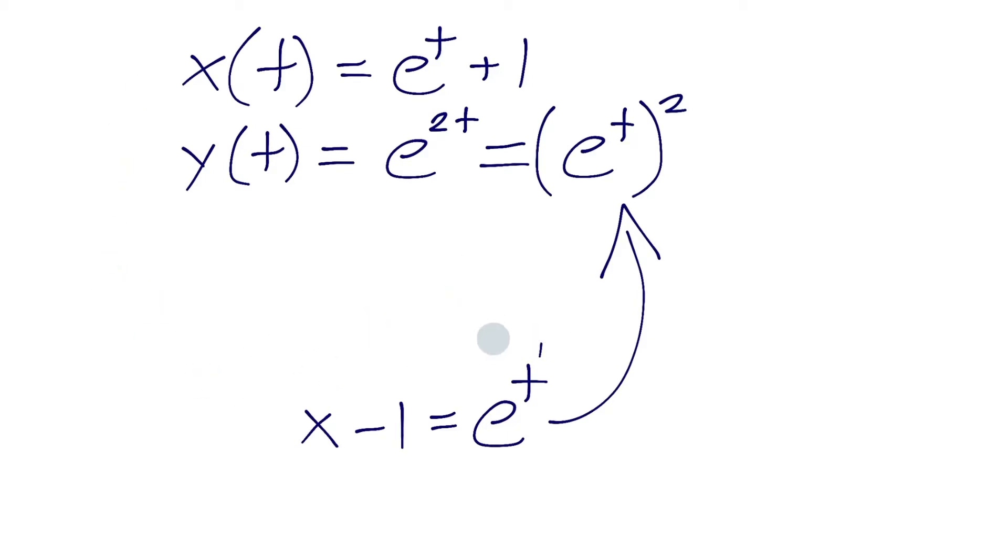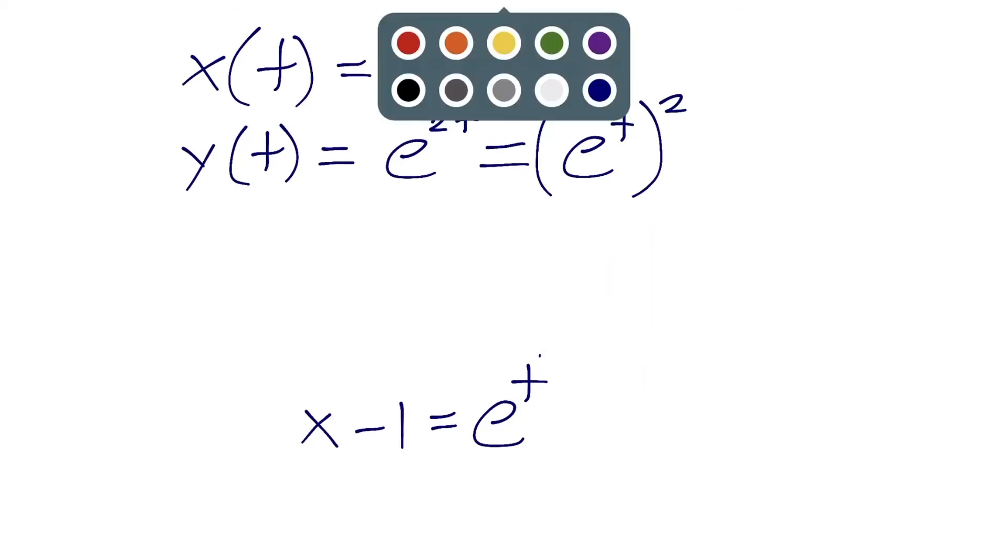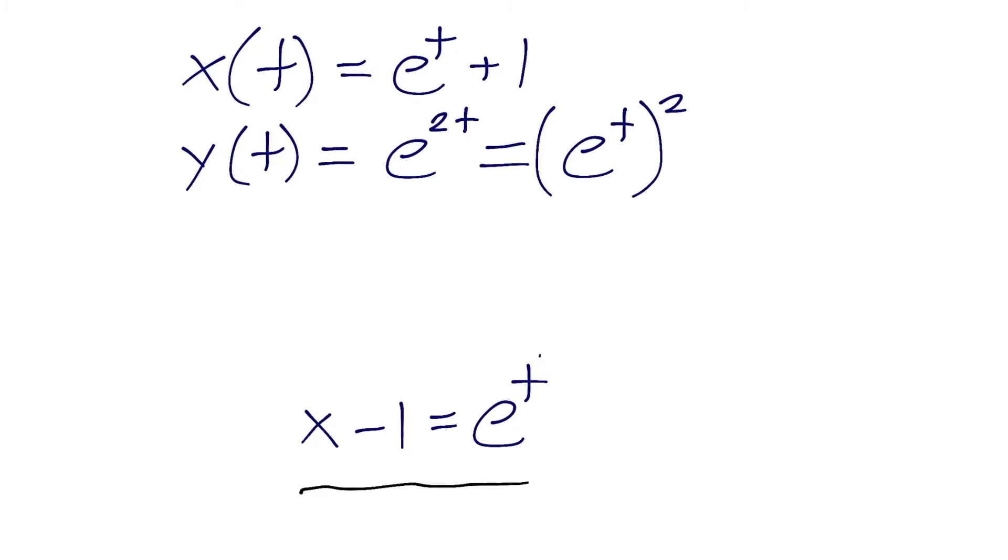So we have our expression on the bottom that we want to plug in. And so this is our equation that will help us make our substitution. And so what we're going to do is we're just going to take y. Now we can even say y of x, just to make this clear here that we no longer have t involved. y of x is going to equal, we're just plugging in this expression on the bottom, e to the t equals x minus 1. It's going to equal x minus 1 squared.